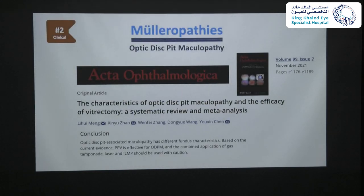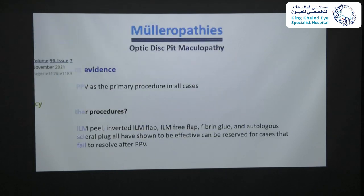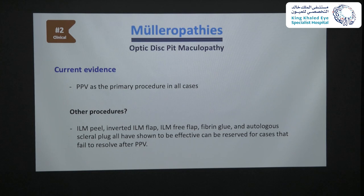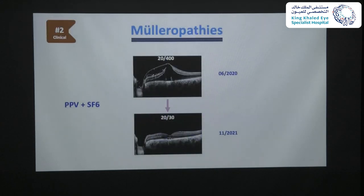A more recent meta-analysis of 59 studies in Acta Ophthalmologica showed pooled incidence of 85% in anatomic and visual successes. The conclusion was that PPV is effective for optic pit maculopathy, and the combined application of gas tamponade, laser, and ILM peeling should be used with caution. The recommended procedure is vitrectomy as the primary procedure; ILM flap, inverted flap, and amniotic membrane can be reserved for cases that fail to resolve after vitrectomy. For our patient, we performed vitrectomy plus SF6 with good outcome.